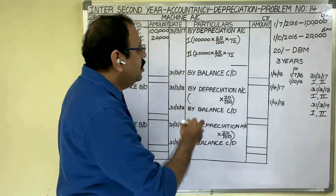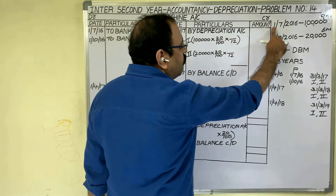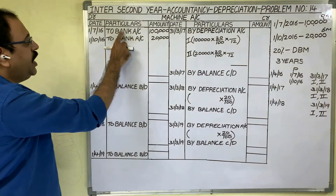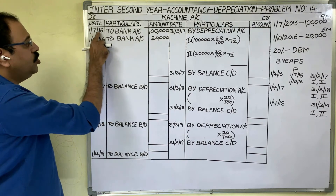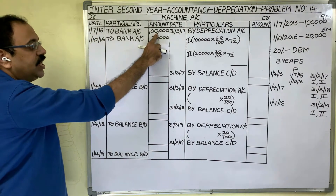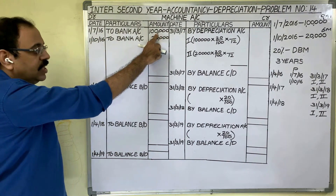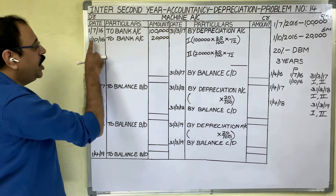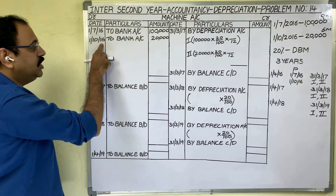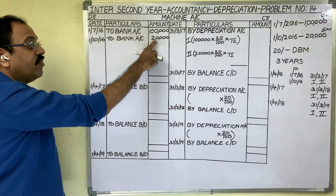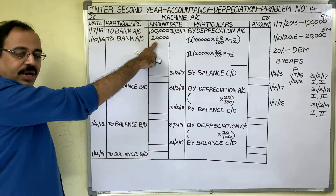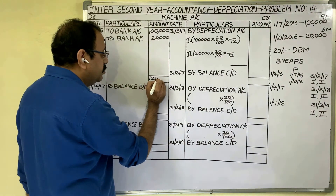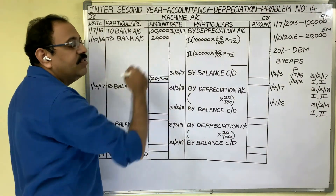Now let us write the answer. On the debit side, write the purchase details: on 1st July 2016, To Bank Account — first asset cost 1 lakh rupees. In the same year, another asset was bought: on 1st October 2016, To Bank Account — 20,000 rupees. So the total becomes 1 lakh 20 thousand.